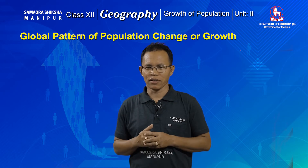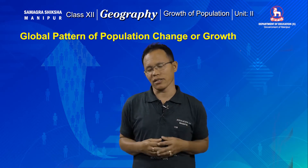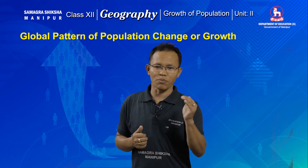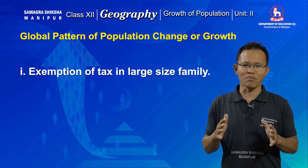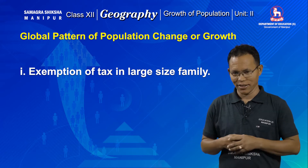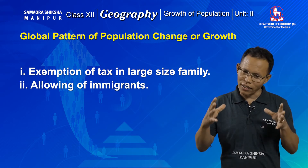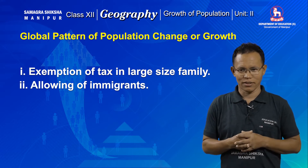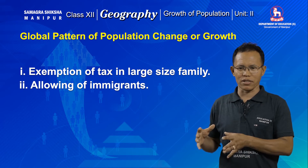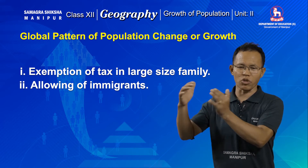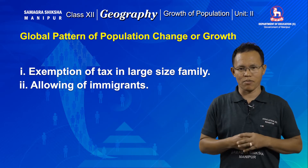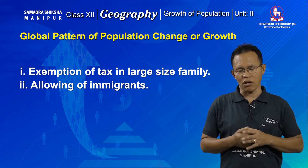Therefore developed countries have also adopted certain measures to boost or increase the growth of population. The first measure is exemption of tax, especially for large-size families. The second measure is allowing immigrants from other countries. When these two measures are fully implemented, the population of developed countries can increase to a certain extent. These are the points we need to understand regarding the global pattern of population change.